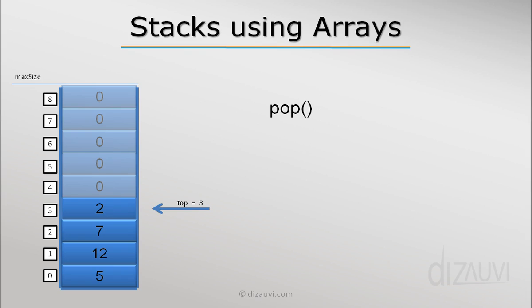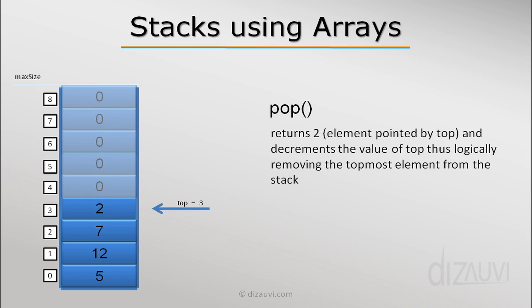Let's see the pop operation. The pop operation should remove the topmost element. How can we do that? It returns the element pointed by top, which is 2 here, and then decrements the value of top by 1. This essentially removes the top element because we don't have a reference to that element anymore, and top now points to the element at index 2, which is 7.